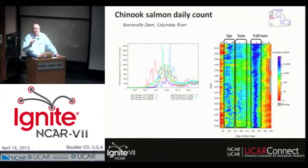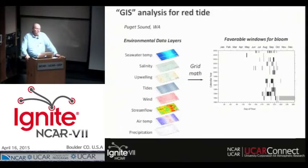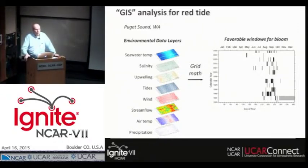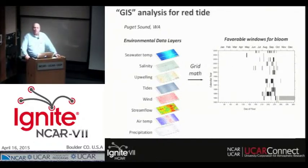But the coolest application I've come up with is this last one: red tide blooms in Puget Sound. We have all these different time series environmental data sets — they're all time maps. We stack them just like a GIS, do some grid math, and we can summarize the favorable windows for blooms. It's a nice way to take a lot of data and summarize it.